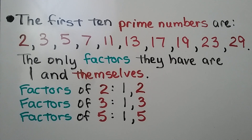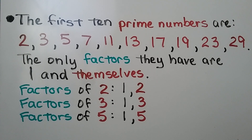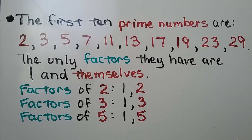The factors for 2 are 1 and 2, for 1 times 2. The factors of 3 are just 1 and 3, for 1 times 3. The factors of 5 are 1 and 5, for 1 times 5. So the only factors that a prime number has are 1 and themselves.